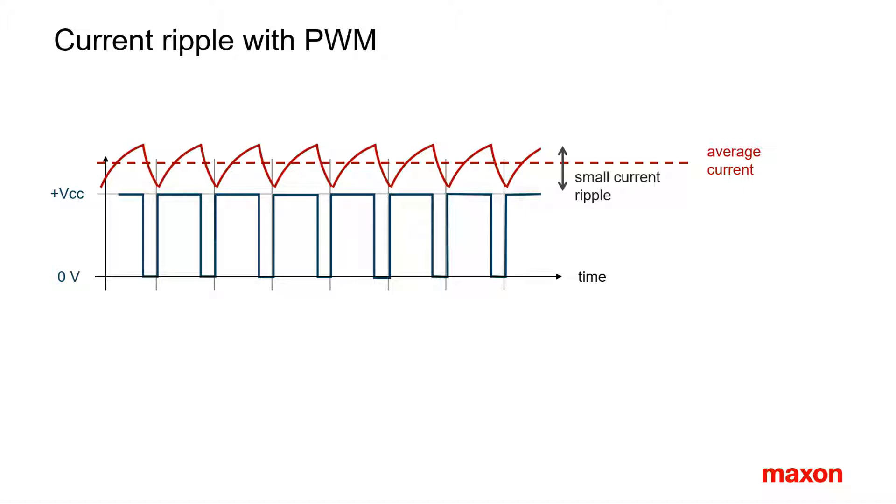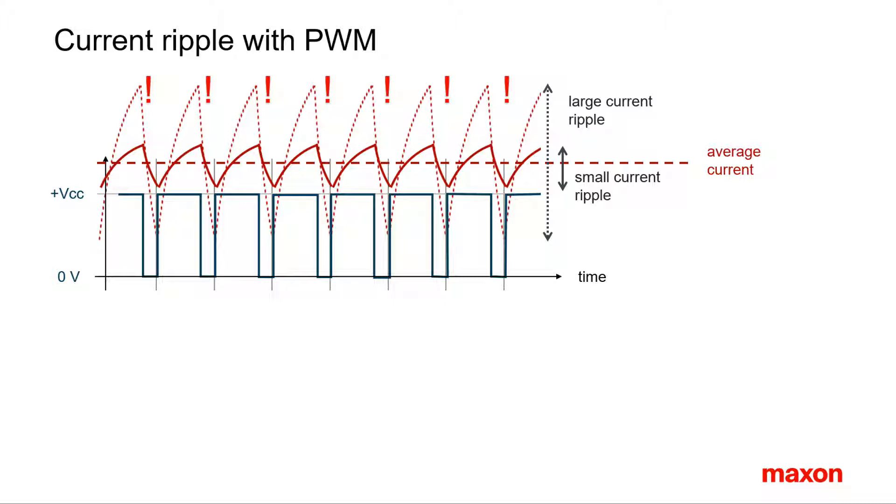Observe, however, it's still the average current that generates the motor torque. A large current ripple can lead to excessive motor heating, because the ripple peaks will heat up the motor more than proportionally. Hence, there is a strong interest in reducing the current ripple, and this is the main focus of this tutorial.